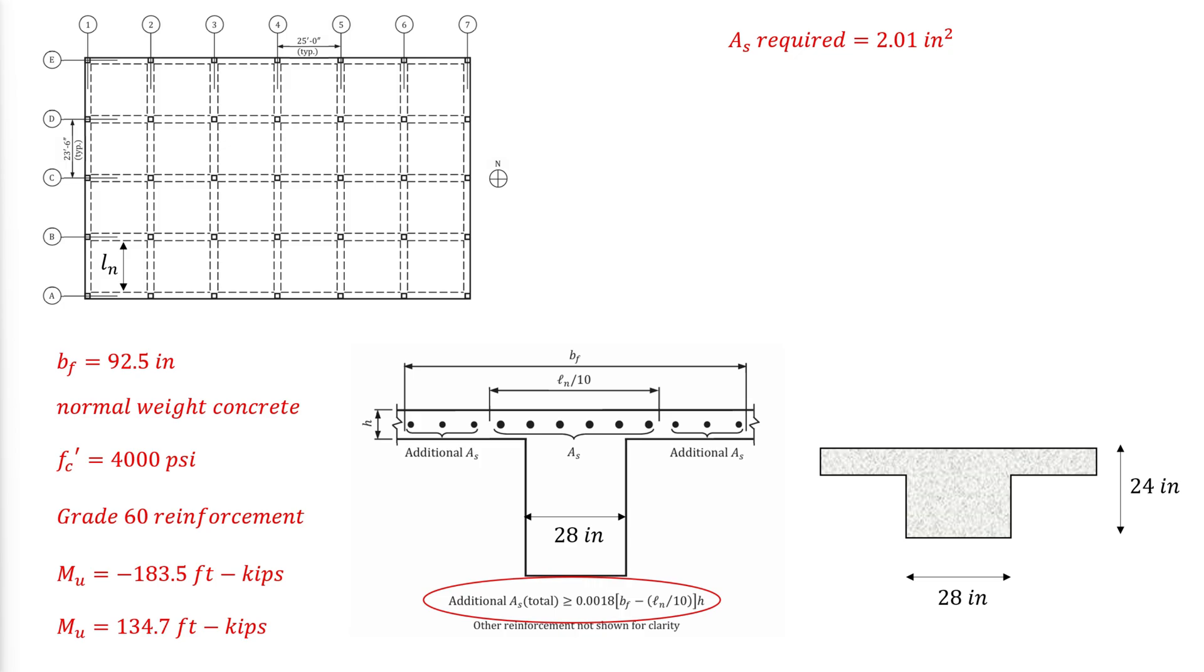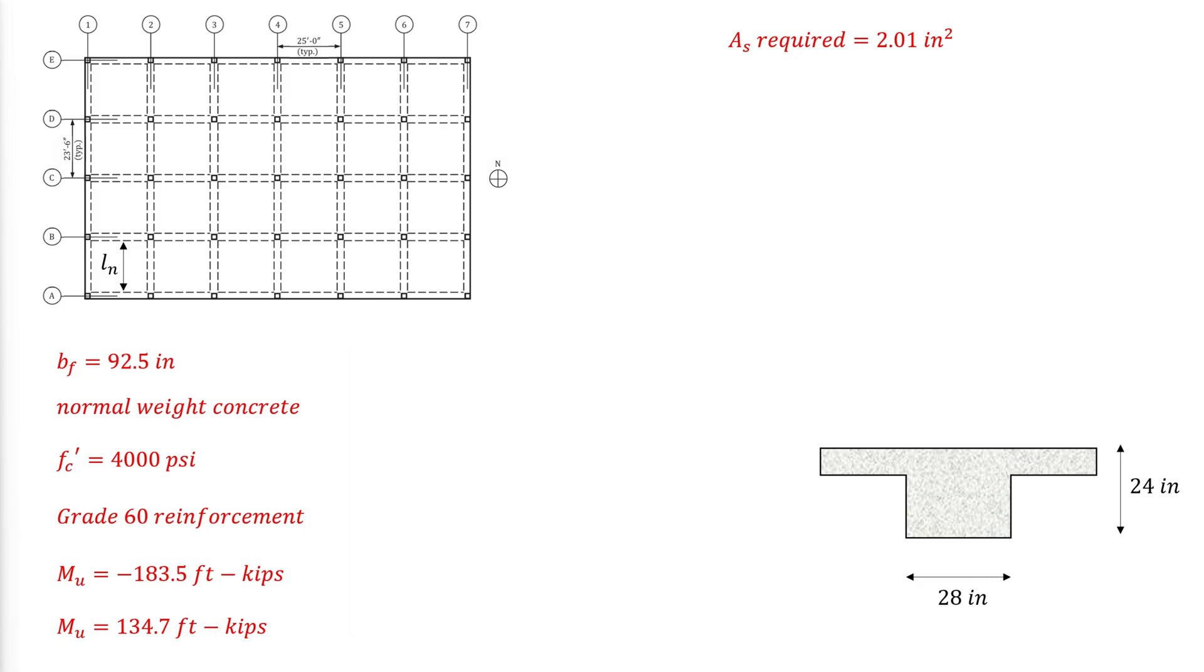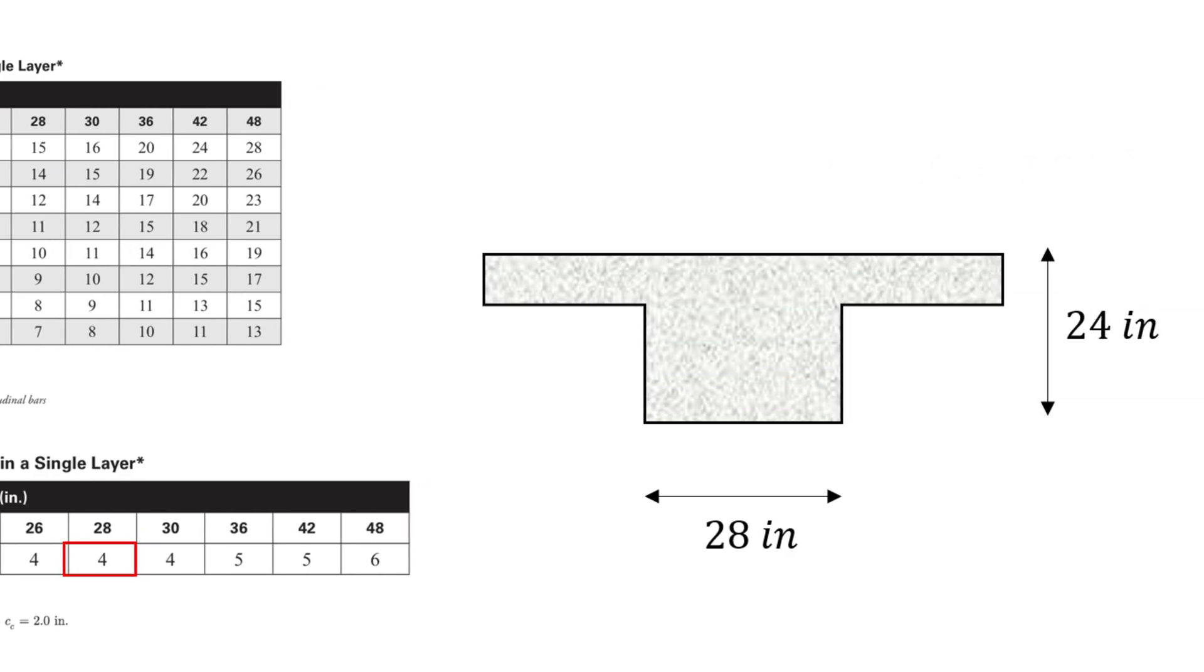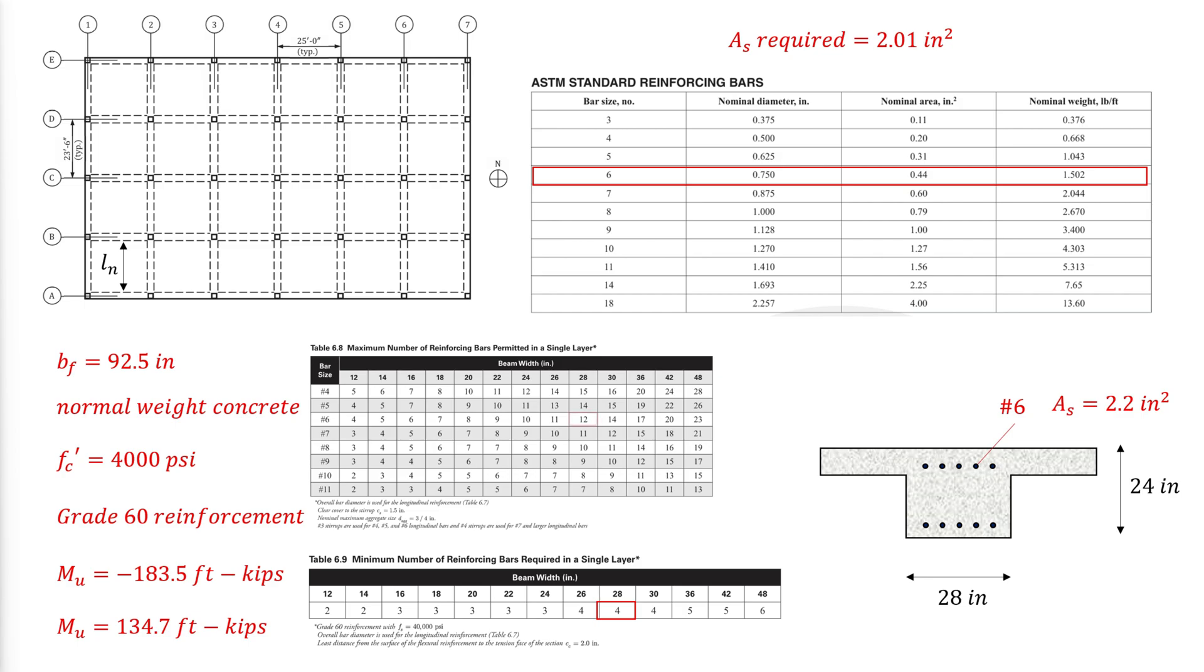The minimum and maximum bars per layer are calculated with the following equations as per the previous video. Alternatively, we can refer to the following tables with the assumptions mentioned below that apply for our example. Thus, the minimum number of bars we can use is 4 bars per layer. So we can try and use 5 number 6 bars. The maximum allowed number of size 6 bars per row is 12 and we have only 5.